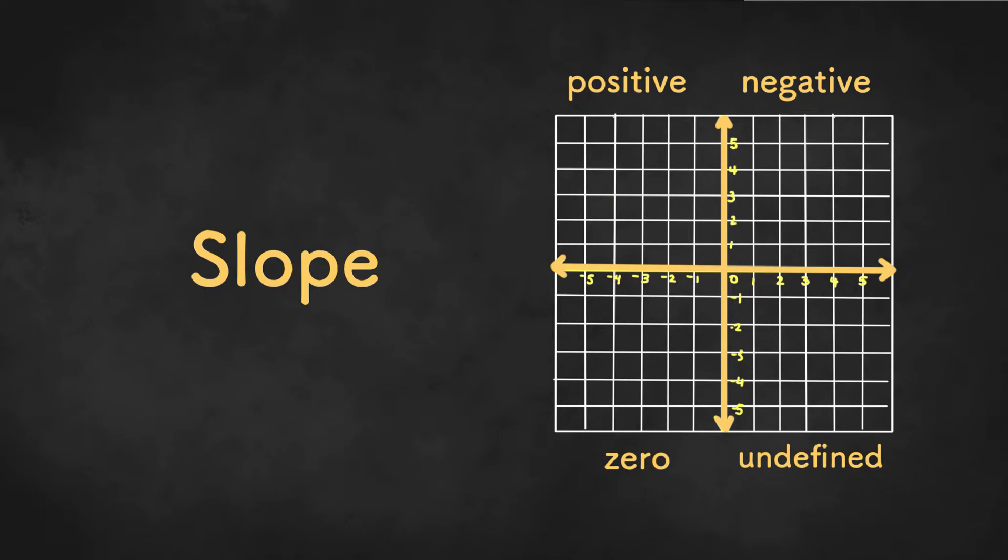Welcome to Education Lifeline. Today we'll be discussing slope. So slope is basically the steepness of a line. There's four different types of slope.